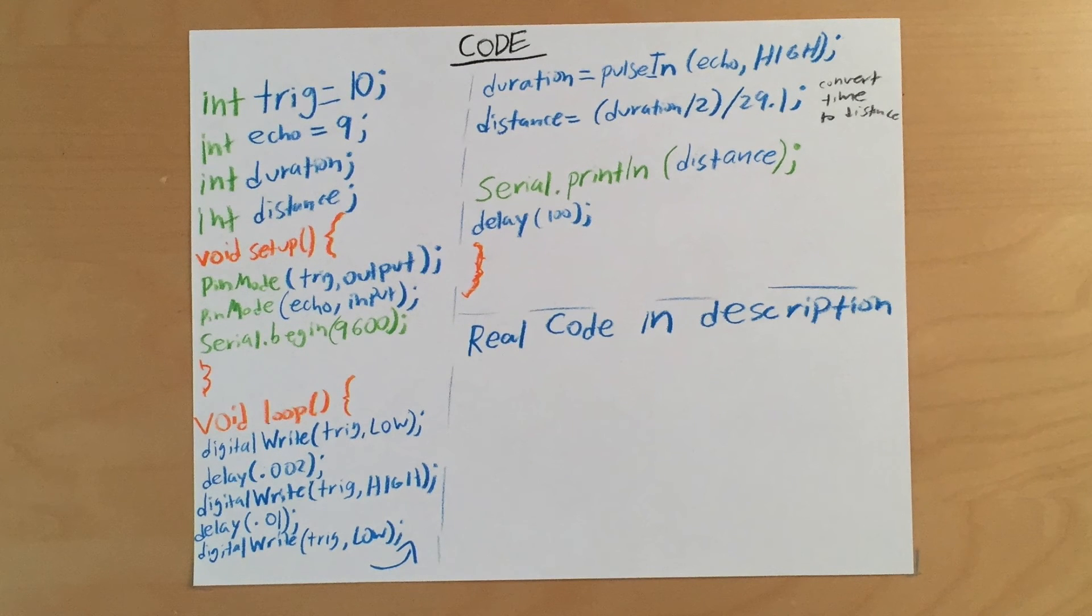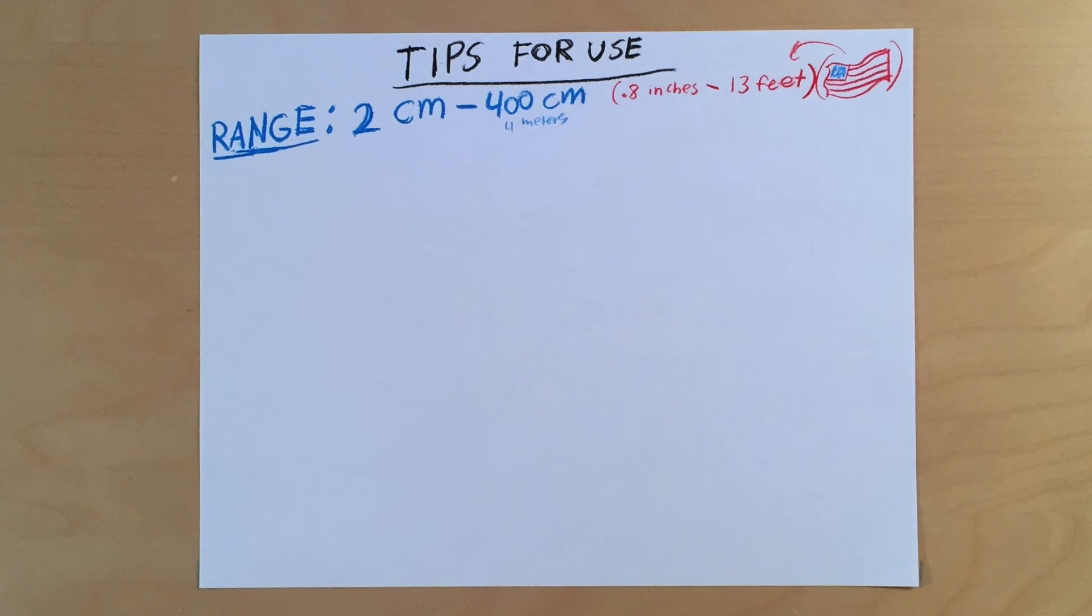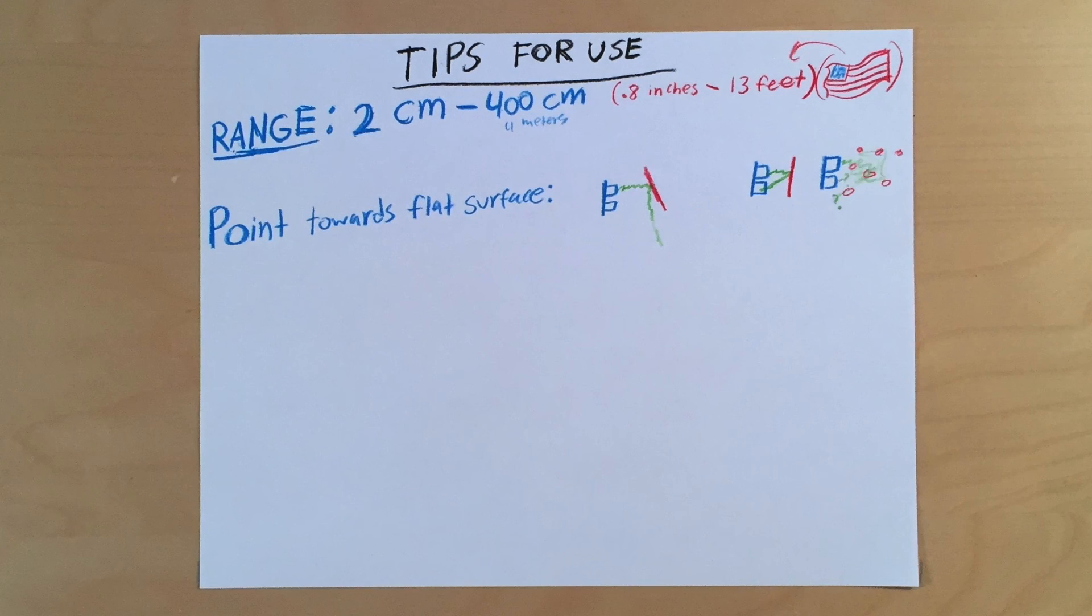Now let's go over some quick tips for use. The range is from around 2 centimeters to 400 centimeters. Also, the sensor is most accurate when it's pointed towards a flat surface.